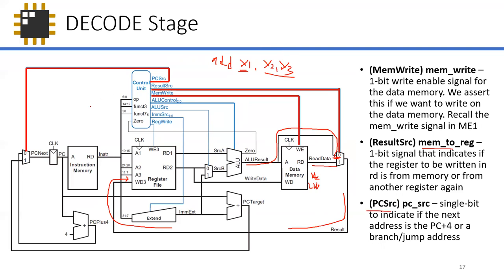The PC source is a multiplexer — one input is PC plus four (the default, zero), and the other is a PC target used for branching and jumping. By default if it's zero, we just get the PC plus four component. When branching or jumping, we compute the target address and use that instead. We'll discuss this next lecture.